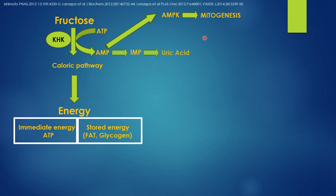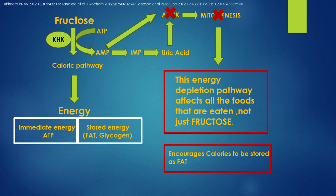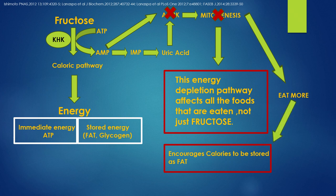However, AMP also produces uric acid — this is the double-edged sword. Uric acid inhibits the switch for mitogenesis. When there is no mitogenesis, you don't have a lot of mitochondria, and even in the presence of excess nutrients, your cells think they are depleted of energy despite abundance. Therefore, they encourage calories to be stored as fat. And since there is less mitochondria being produced, your fat cells give off signals to the stomach to produce ghrelin so you eat more. The more you eat, the more calories are stored as fat, and you become obese.